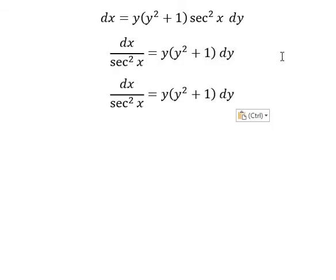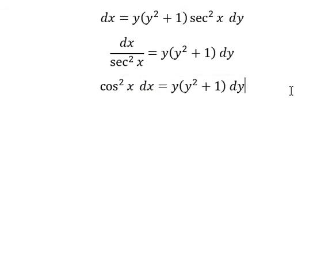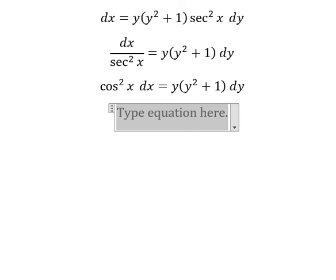So we will have cosine squared x here, dx. Next we put the integral on both sides.